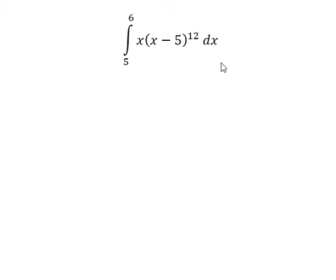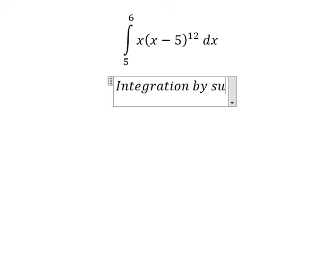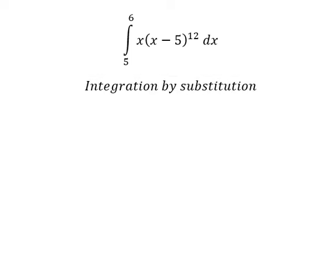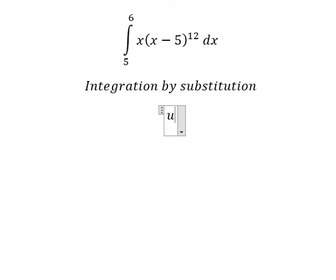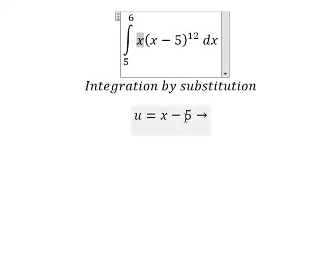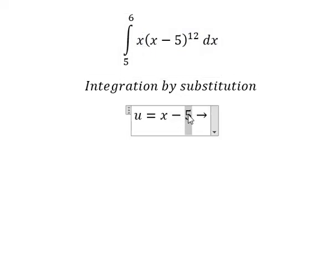Now I will show you how to solve this. We need to use integration by substitution. I will set u equals x minus 5. Because we have x, I will move negative 5 to the left, and we have u plus 5 equals x.